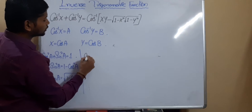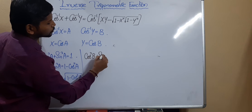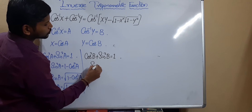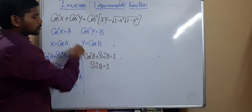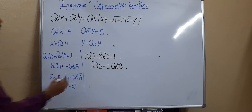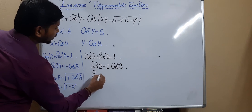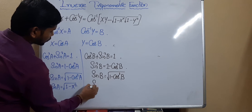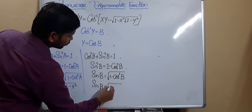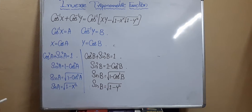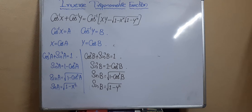We already know cos²b + sin²b = 1, so sin²b = 1 − cos²b, and sin b = √(1 − cos²b). Since cos b = y, we have sin b = √(1 − y²). I think you understood the basics here.